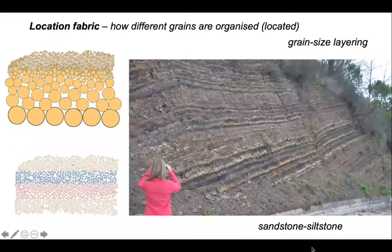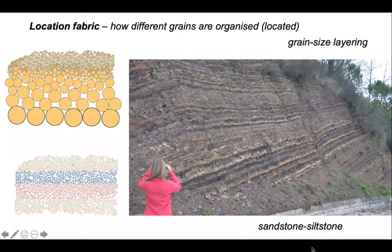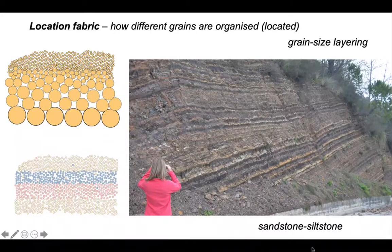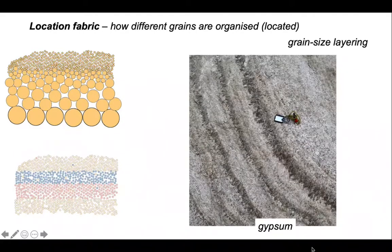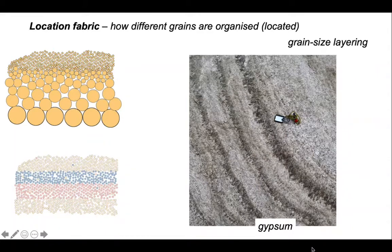Here's another example on a larger scale where we can see alternations through the road cutting — sandstone and siltstone — so we're seeing the rock organized on the basis of its grain size. Here's another example with grain size variations in a rock made entirely of gypsum. You can see those dark layers which are significantly coarser-grained than the lighter ones in the photograph.